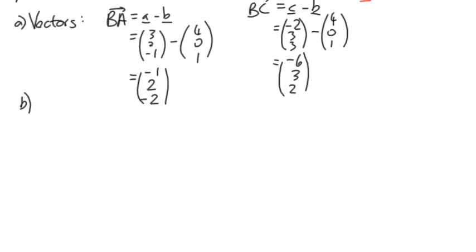So we can see that the vector product is going to be BA cross BC, vector product of those two. So how do we work that out?